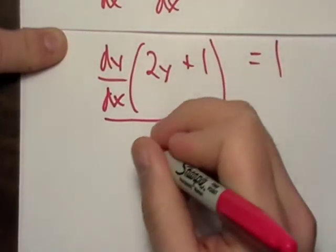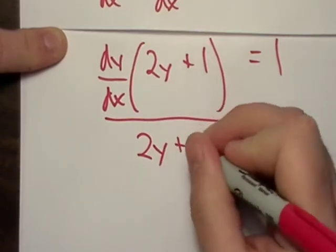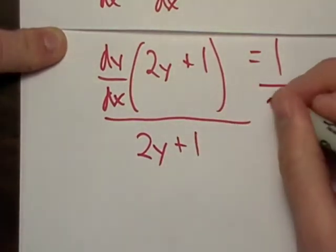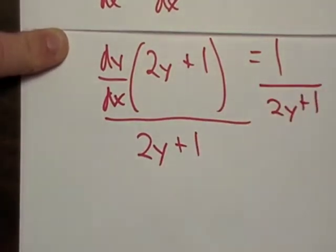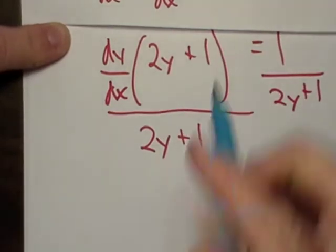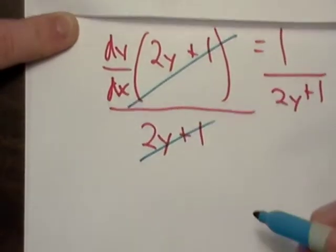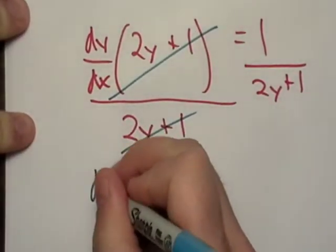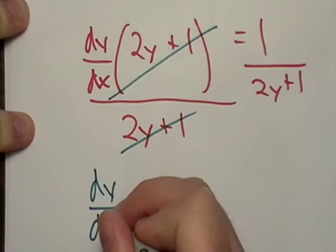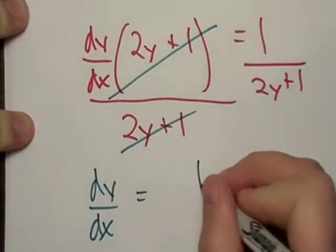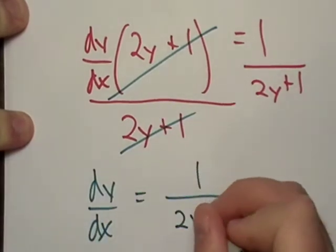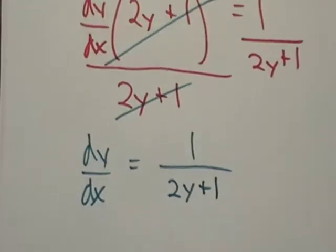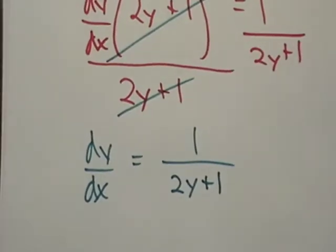All that being equal to one. And now what I want to do is I want to just divide out the 2y plus one, and of course we do that to both sides. So this cancels out, this cancels out. And at the end of the day, I'm left with dy/dx being equal to one over 2y plus one. So not too bad.